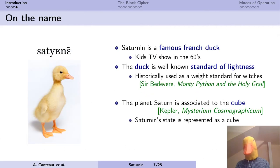About the name: Saturnin is a famous French duck, the hero of the TV series Les Aventures de Saturnin, a series meant for kids made from real-life footage of animals which are then dubbed. The main character, a duck, looks like the picture here from Wikipedia. Personally, I find it a bit scary, but if you're not afraid of a duck that talks in French, you can still look up the episodes on the internet. We also know that ducks have been historically used as a standard of lightness, as reported in the movie Monty Python and the Holy Grail. A duck is lightweight because it floats, or maybe because it's made of wood. Also, the planet Saturn is associated with the cube in Kepler's cosmography, which is nice because Saturn's state is going to be represented as a cube.